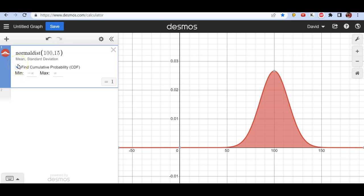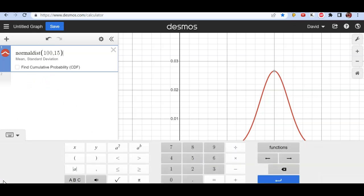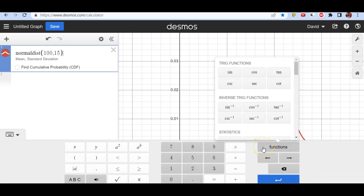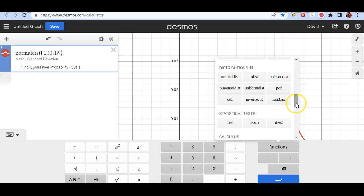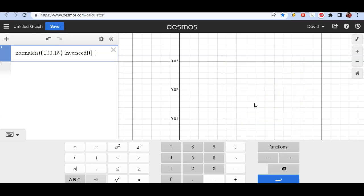I'm going to uncheck this box. And what the inverse normal does is you tell it an area, and you want to know what number has that area to the left of it, specifically to the left of it. So if you go down here to the keypad, you can go to functions, scroll down to distributions, and there is inverse CDF. So I'm going to click on inverse CDF.